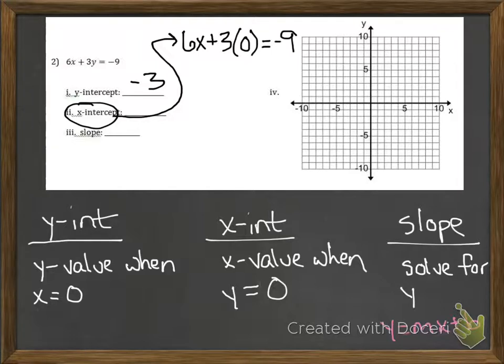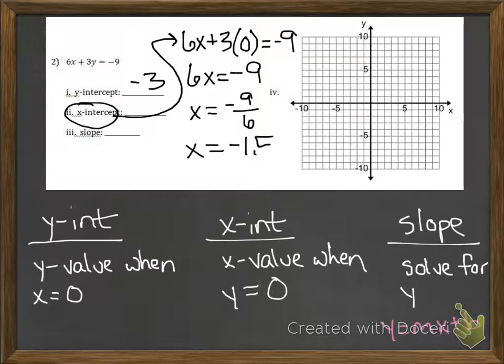For our x-intercept, we'll go back to our original equation, but this time plug in 0 for y. That gives us 6x is equal to negative 9, if we divide both sides by 6, then we end up with negative 9 divided by 6, which ends up simplifying to negative 1.5, so that's our x-intercept.